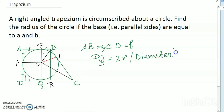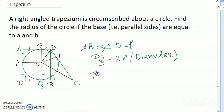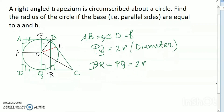I draw a line BR — this is also a 90 degree perpendicular. BR passes through vertex B, touching side CD at R, so BR is parallel to PQ.